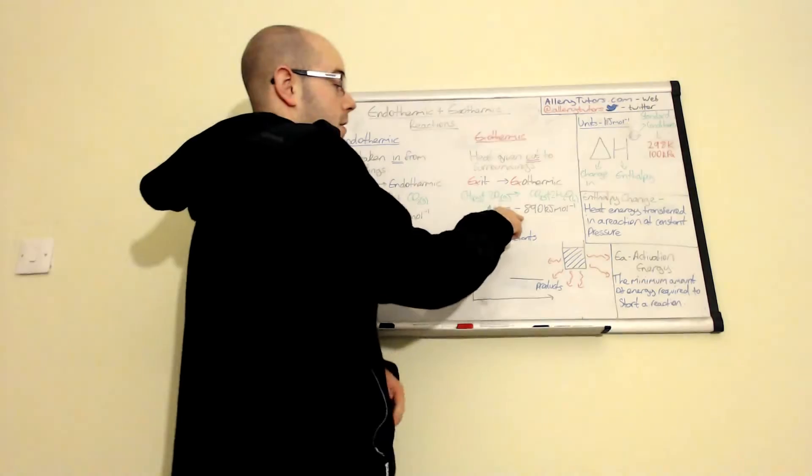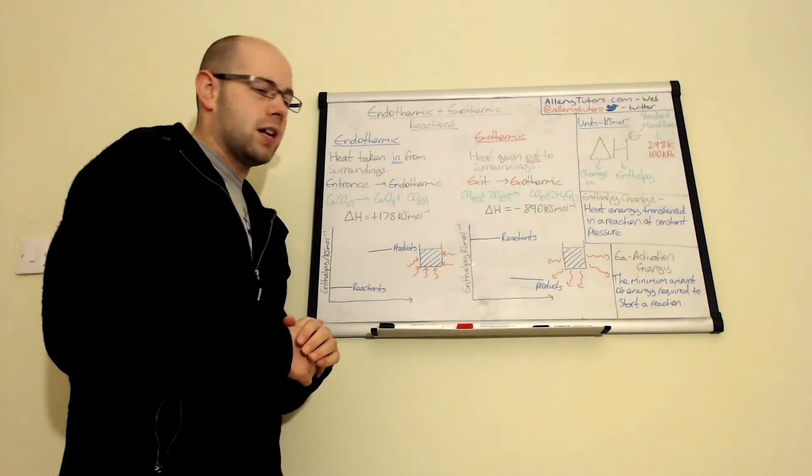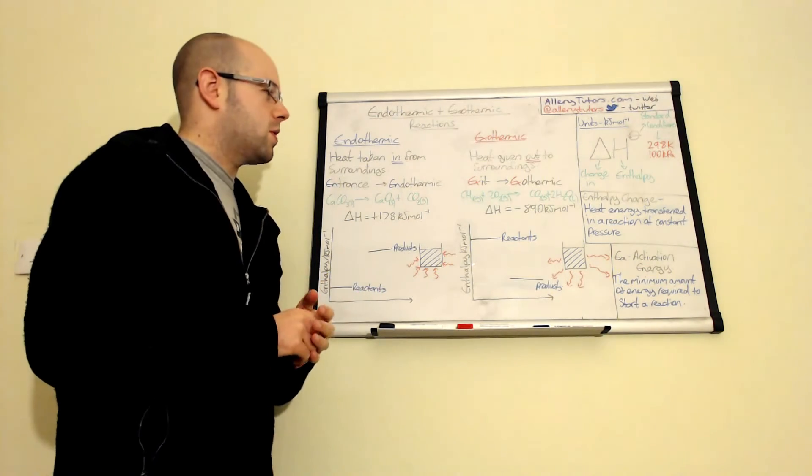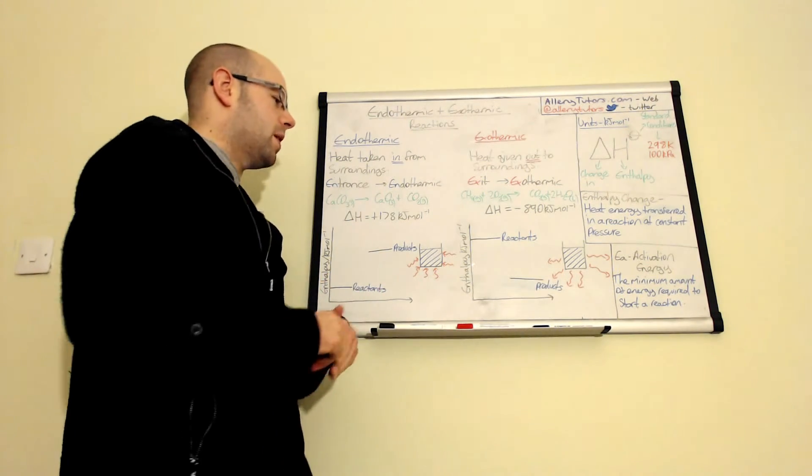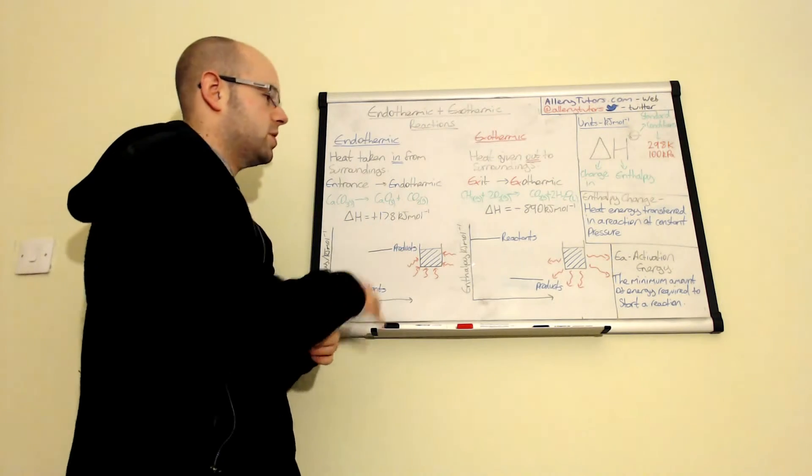So this number here, I'll come back onto this, tells us that it's minus 890 kilojoules per mole, which is quite a lot, which is quite a large amount. Now, I'm going to show this in terms of an energy diagram, and then I'll come over onto the end of the third one.